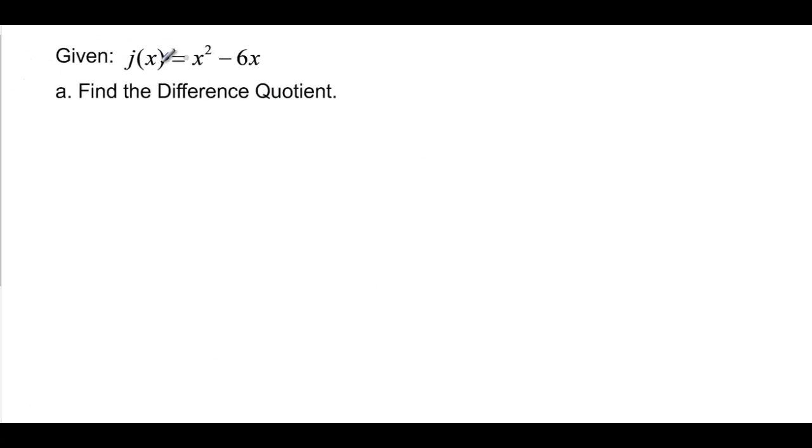Let's keep going. j of x, find the difference quotient. j of x plus h. Now I've got to put it in more than once. x plus h is going to be squared, minus 6 times x plus h.